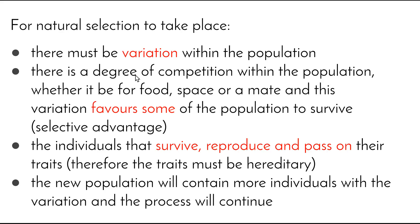There must be variation within a population. If every single individual within a population is exactly the same, natural selection can't take place, because if there's a change in the environment then all of them will be wiped out at once. But if we've got some variation within some individuals in the overall population, and a change occurs that those different individuals are able to survive, then we're in business.